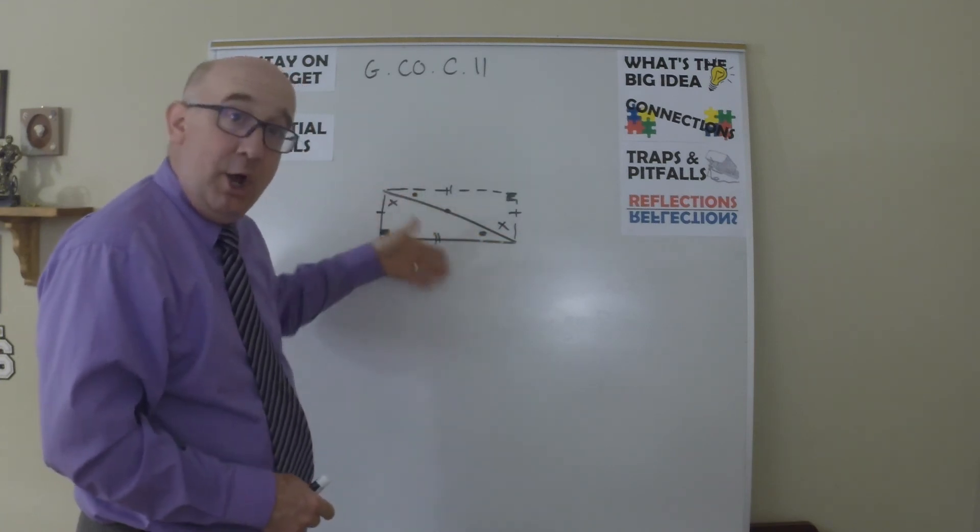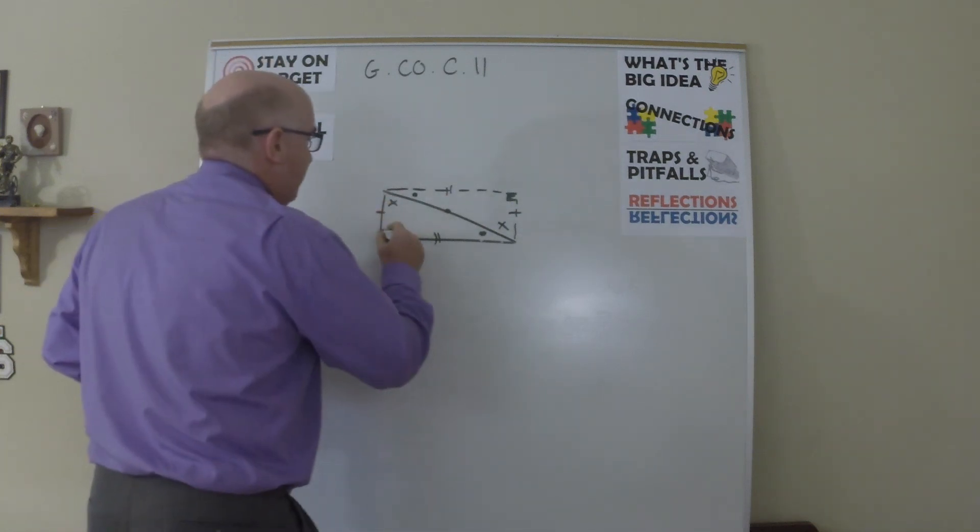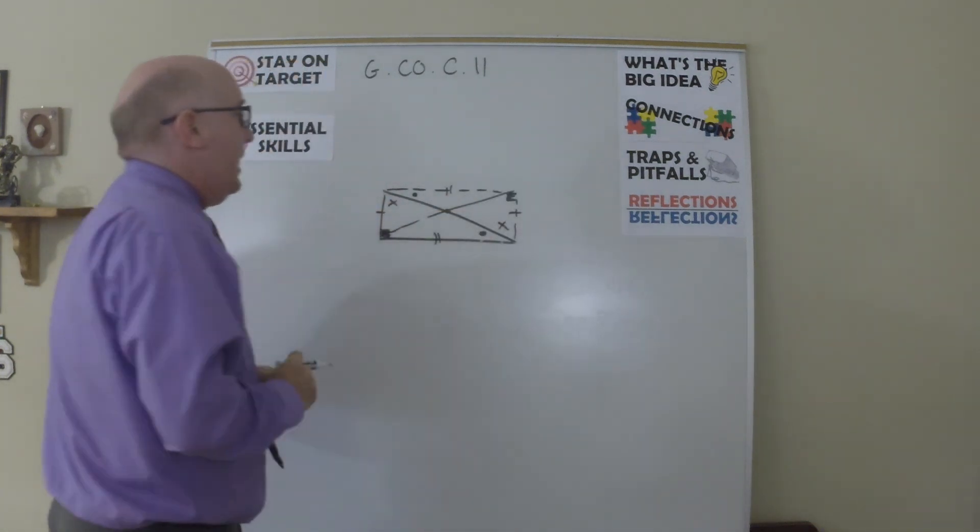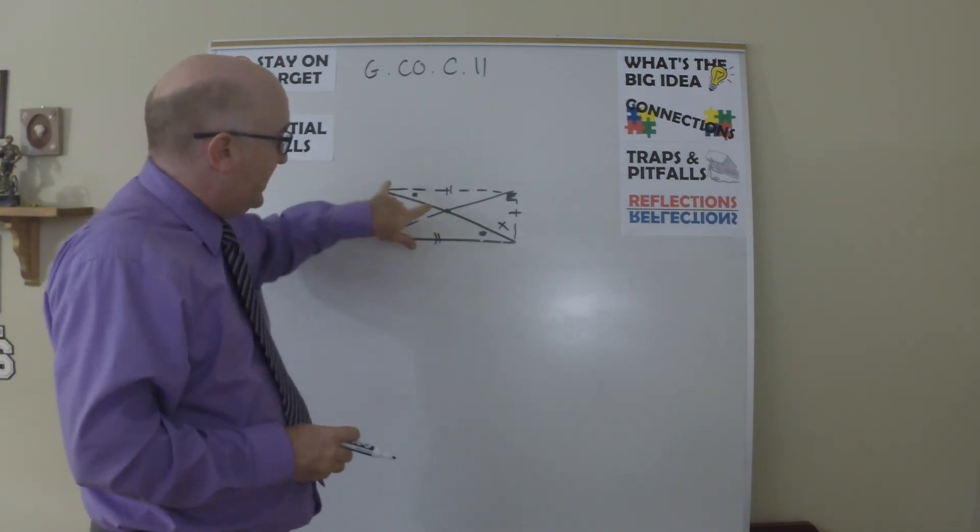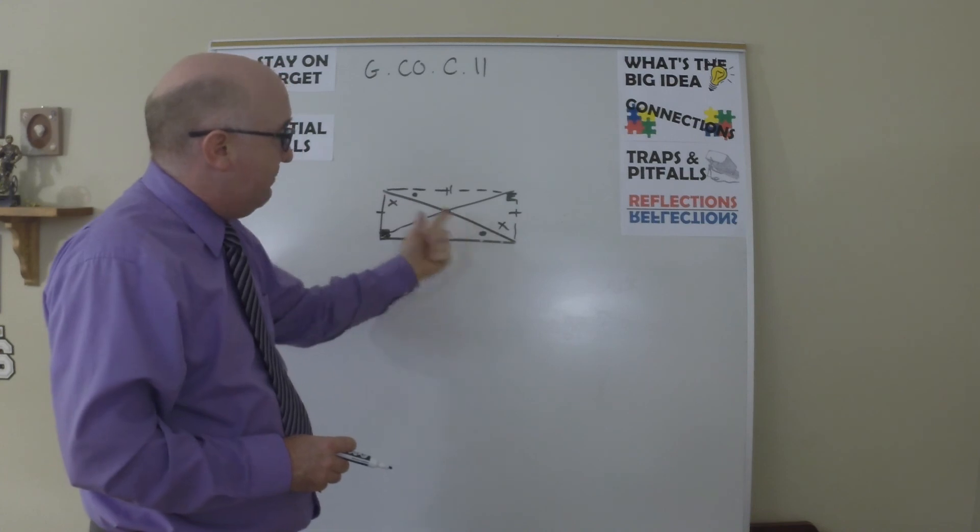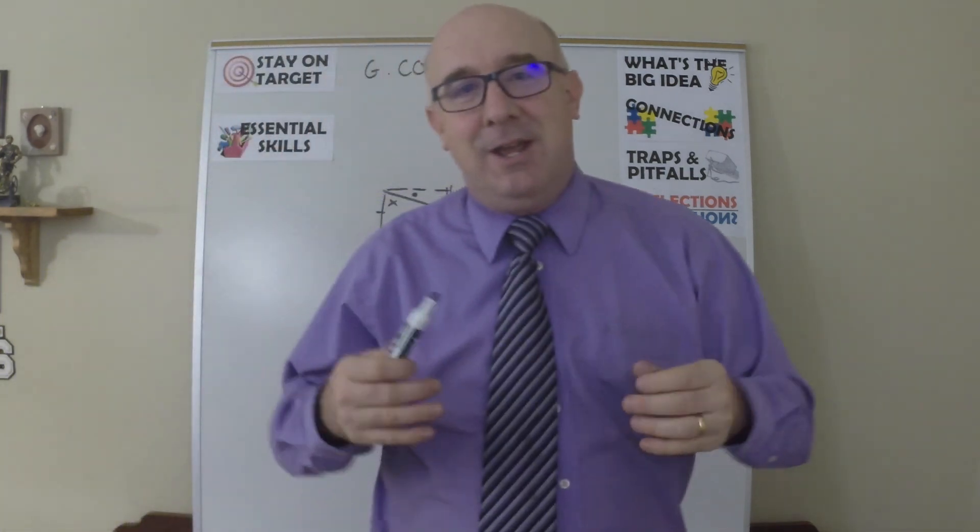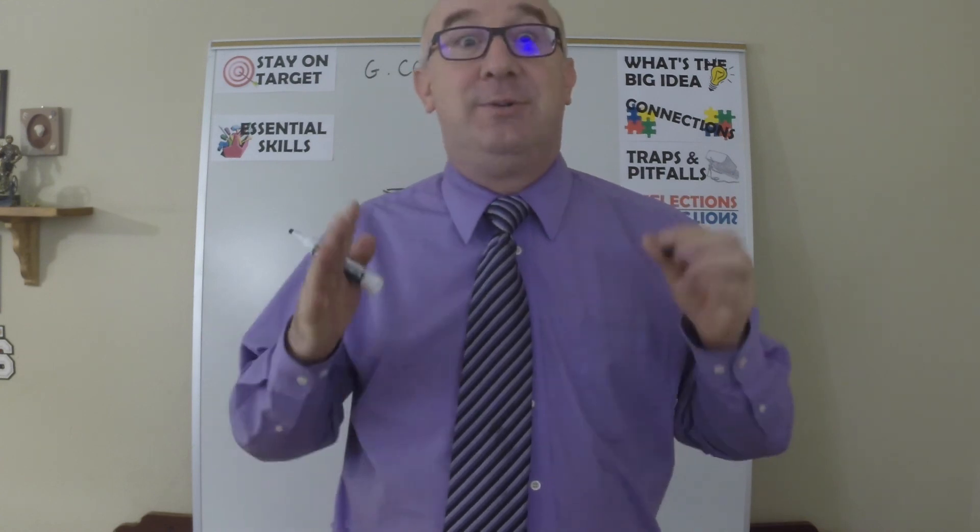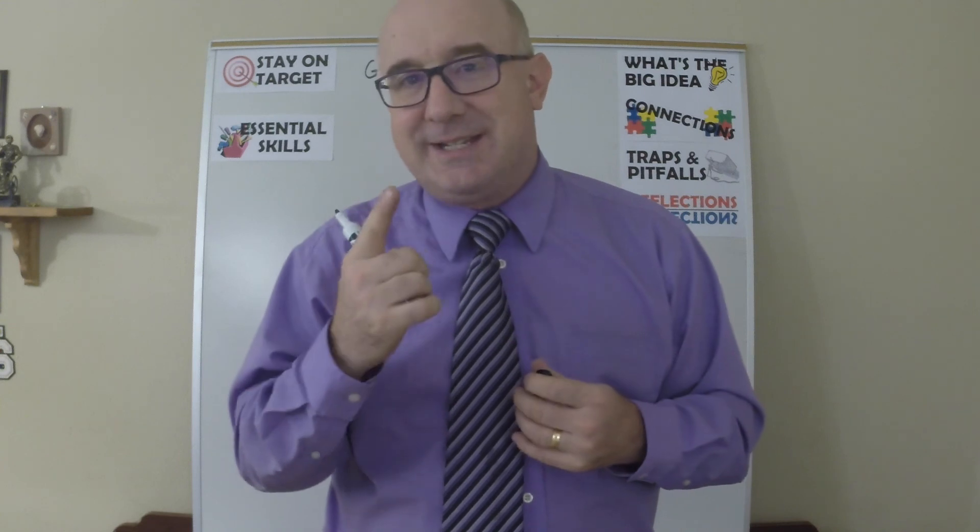So this is 90, this is 90. Opposite sides are equal. I know that my diagonals have to bisect each other because in 180 degree rotation, this mapped onto this and so on. Do you see how I'm using transformational geometry to establish things about my quadrilaterals? This is the idea.